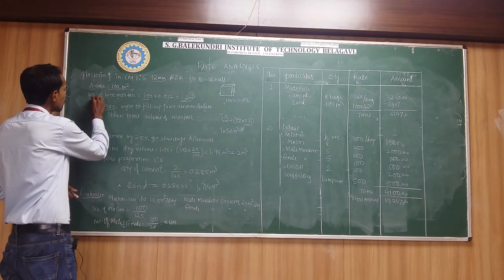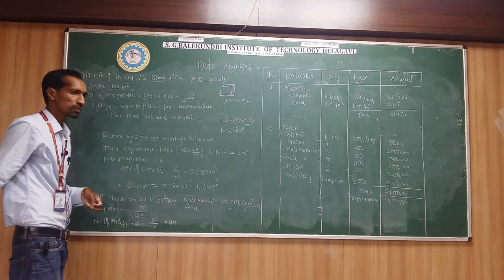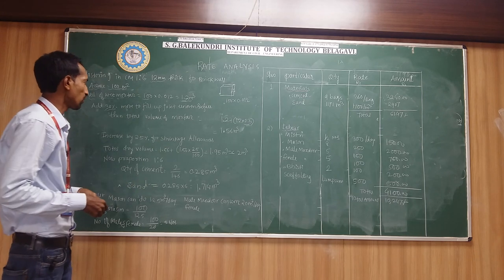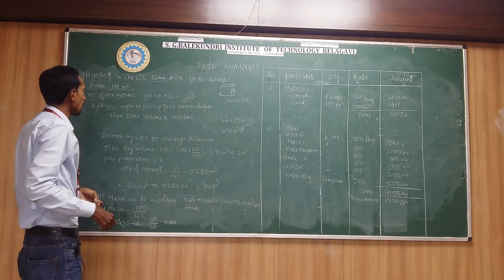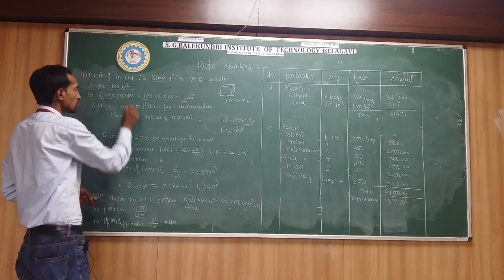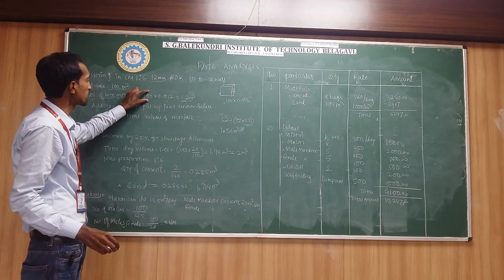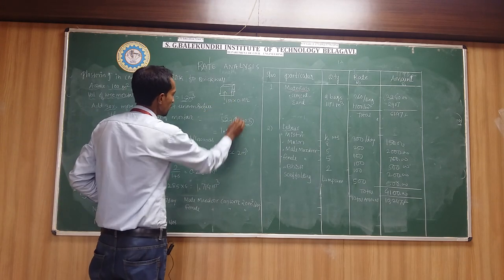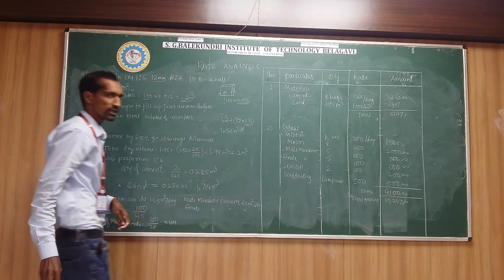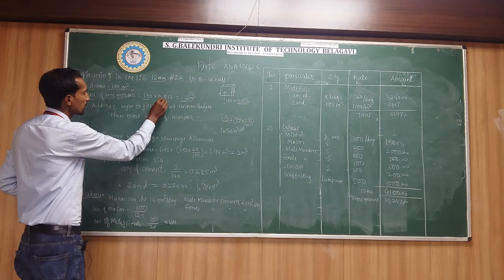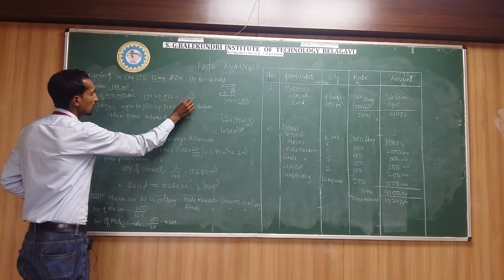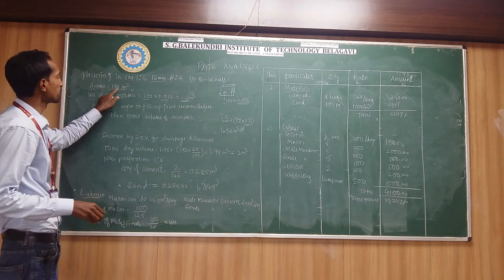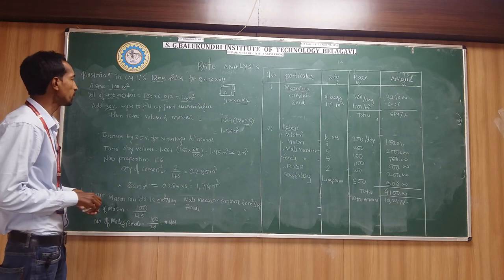We are going to calculate the wet mortar. Plastering requires mortar, and in this mortar we calculate the cement and sand quantities. First, we calculate the wet mortar. The area is 100 meter square, and we multiply by the thickness of 12 mm. The volume required for plastering 100 meter square is 1.2 meter cube.